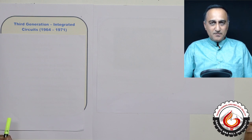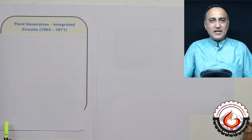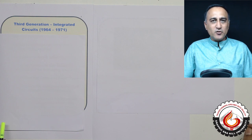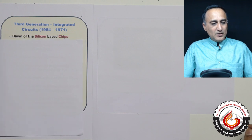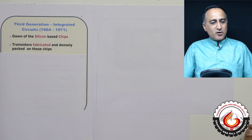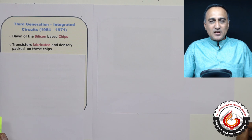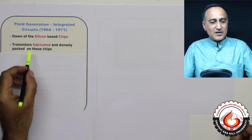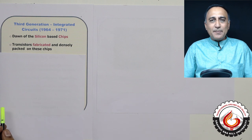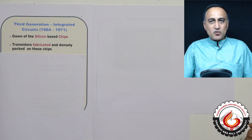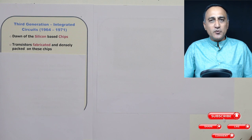The third generation was between 1964 and 1971. It marked the commencement of integrated circuits, known as ICs. The dawn of ICs or silicon-based chips revolutionized computing. Millions of transistors could be fabricated and densely packed on a very small area of square centimeters or square inches, drastically reducing the size of machines and power consumption.